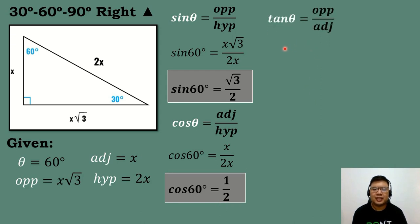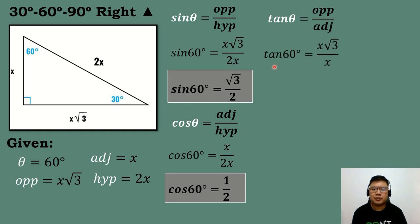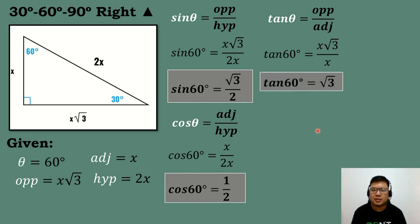Let's solve for tangent theta. Tangent theta is equal to opposite over adjacent. Substituting the corresponding value, tan 60 is equal to x square root of 3 all over x. Simplifying, x cancels out in both numerator and denominator. So tan 60 is just equal to square root of 3.